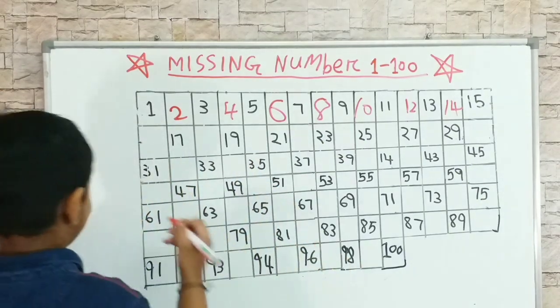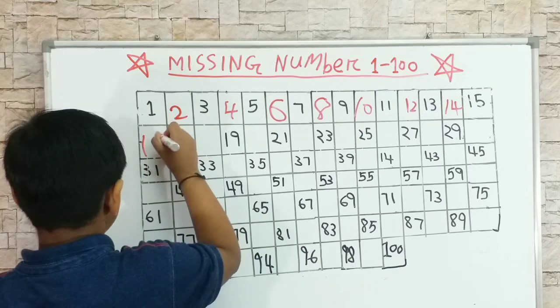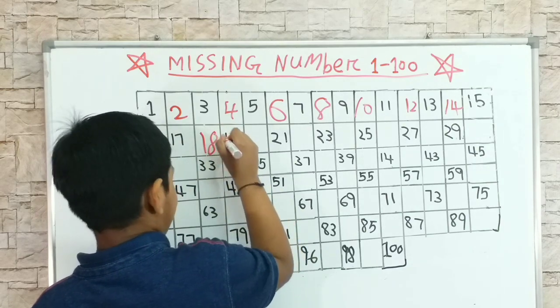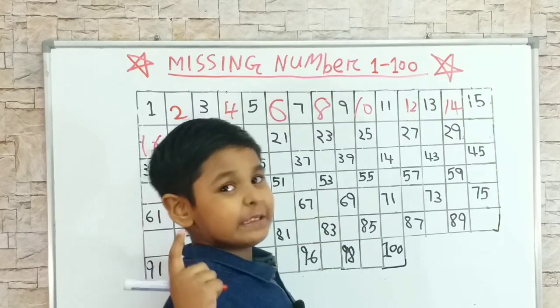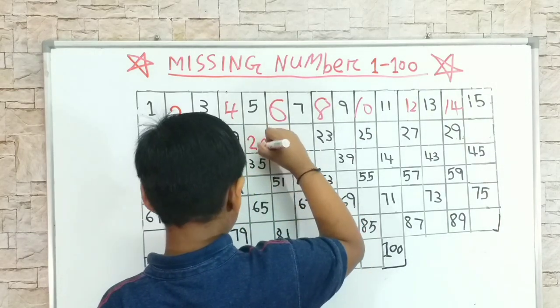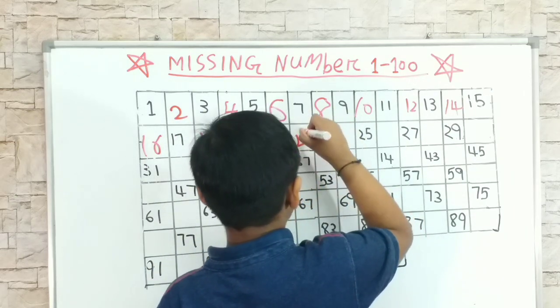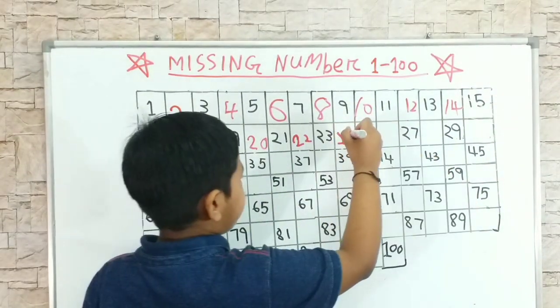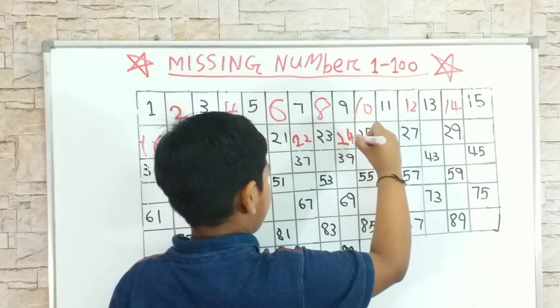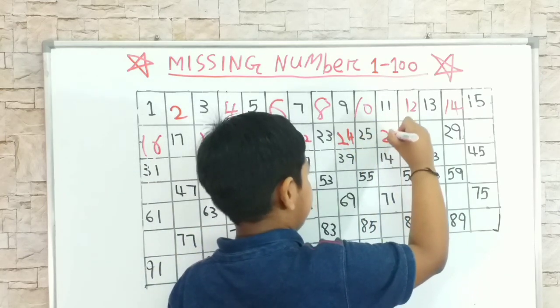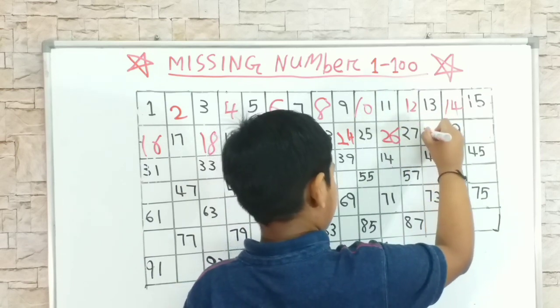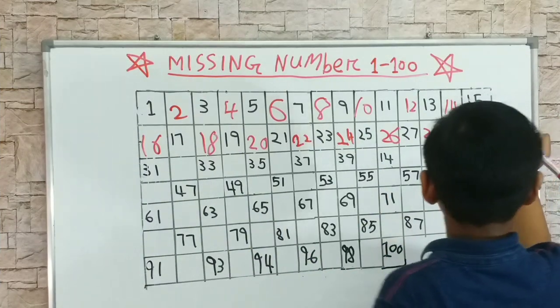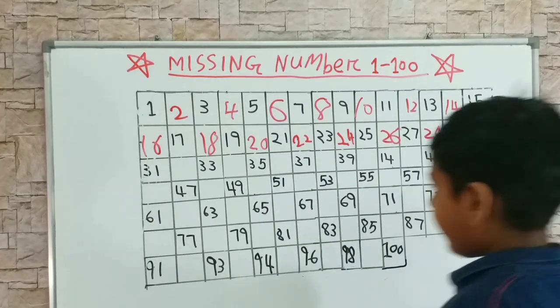A six. One six, sixteen, eighteen. Eighteen, nineteen, twenty. Yes, there's twenty! Two zero. Twenty, twenty one, twenty two, twenty-three, twenty-four, 24, 25, 26, 27, 28, 29, 30.